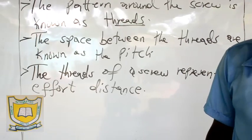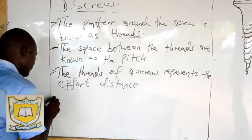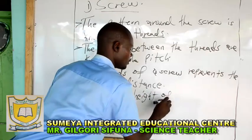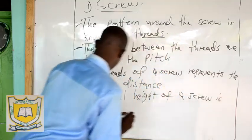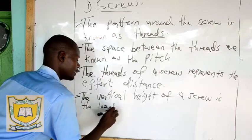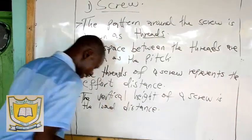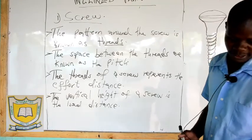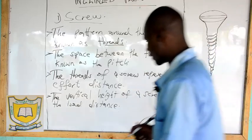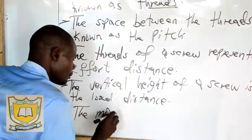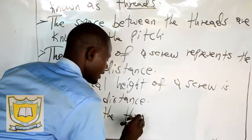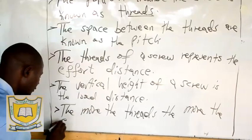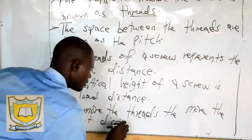The vertical height of a screw is the load distance. We have the effort distance and also the load distance on the screw. The more the threads in a screw, the more the effort distance.